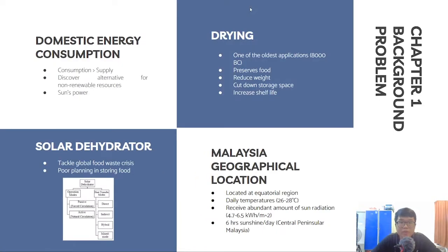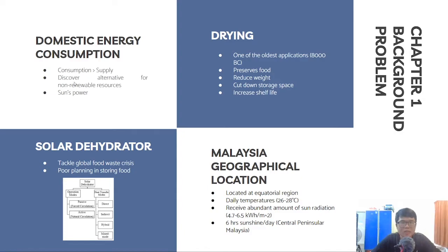Now let's begin with the first sub-topic of Chapter 1: Background Problem. Domestic energy consumption nowadays is way higher than supply due to the rapid development of society. The rapid depletion of non-renewable resources indirectly led to skyrocketing costs. These issues have drawn the world's attention toward discovering renewable resources as an alternative. Eventually, solar power came to people's attention, and when it comes to solar power, we can associate it with drying.